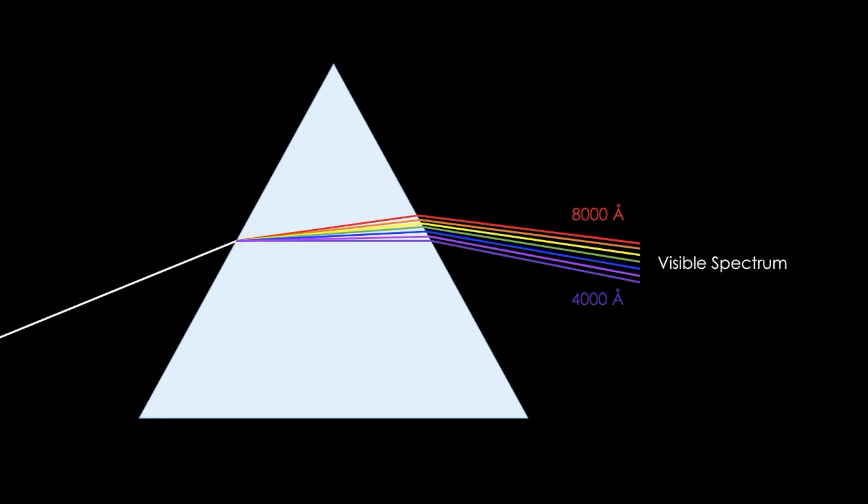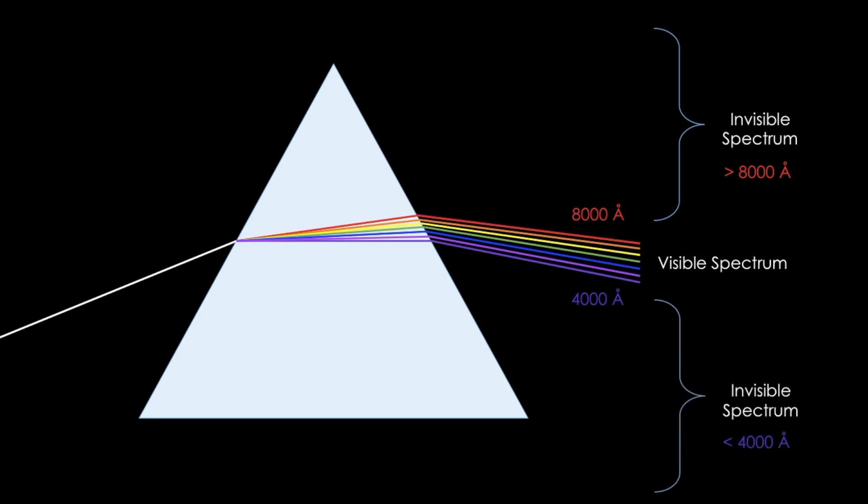Since there's a visible spectrum, it follows that there should be an invisible spectrum as well. The invisible spectrum is in two parts: one part has wavelengths greater than 8000 angstroms and the other part has wavelengths lesser than 4000 angstroms. This entire spectrum — visible or invisible — is made up of electromagnetic waves.